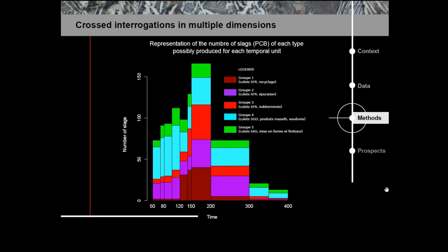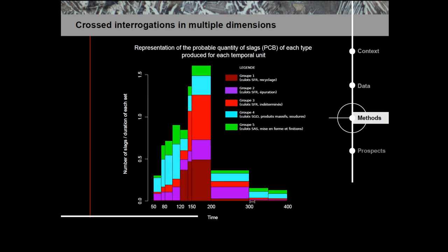We can make other observations, even going back to the slag itself. We have here a representation of the number of slags of each type on these time intervals. It can be normalized by dividing the total quantity of slags by the length of the interval. We can observe and identify the dynamics. Here we can see probably three big movements.